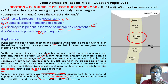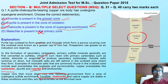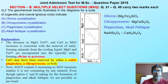So in the succession: in gossan we have goethite and limonite; in the oxidized zone we have malachite and cuprite; in the enrichment zone we have chalcocite and covellite. Malachite is not present in the primary zone. The correct options are A and B. Moving to the next question — this is a very simple question.